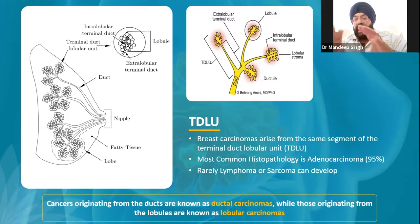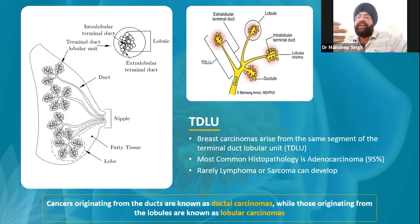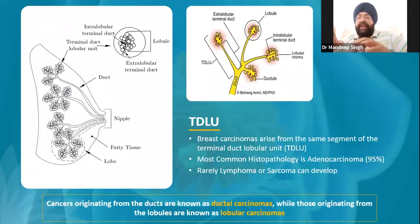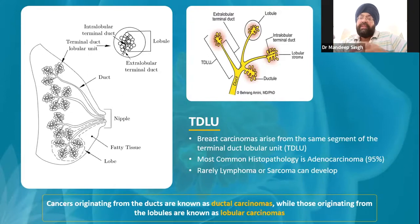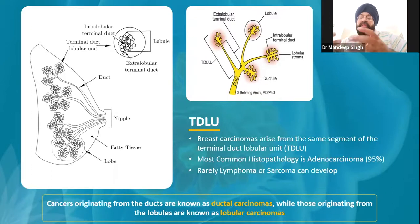The cancer which occurs inside this milk-forming apparatus is the conventional standard breast cancer we get in the majority of cases. On rare occasions, the stroma — tissue that is not the milk-forming apparatus, such as lymphatics, blood vessels, and muscles — may form cancers such as breast sarcoma or breast lymphoma.